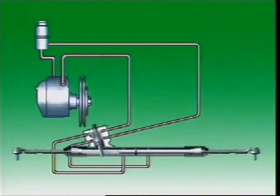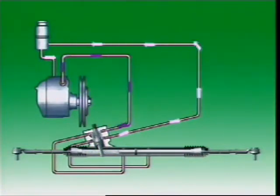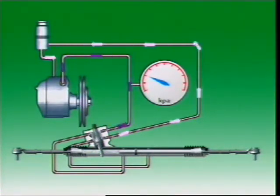The fluid reservoir can be mounted on the pump or it can be separate. With the engine running, fluid flows continuously from the power steering pump to the steering gear and back to the pump. With the steering wheel in the neutral position, little pressure is needed to maintain fluid flow and little engine power is needed to operate the system.